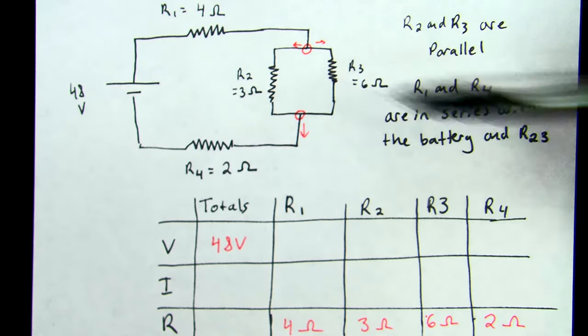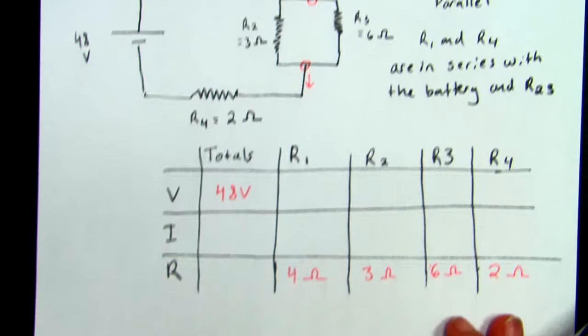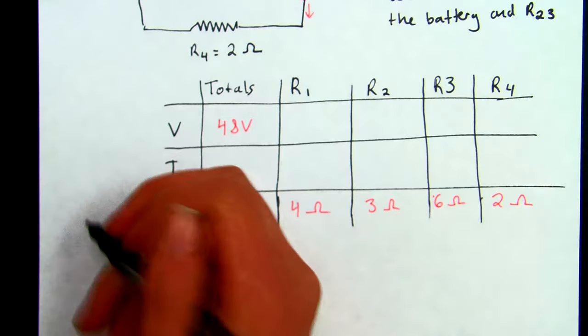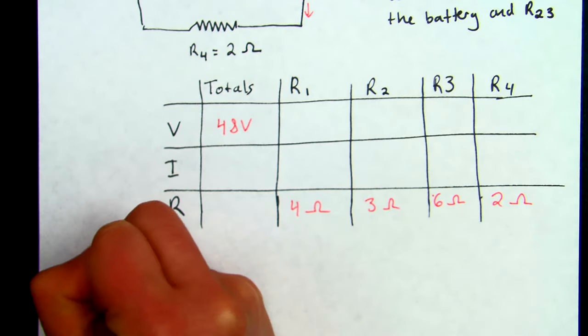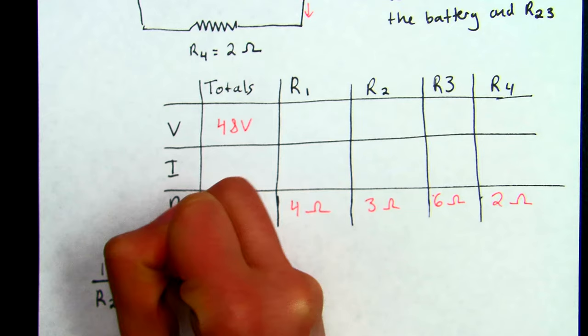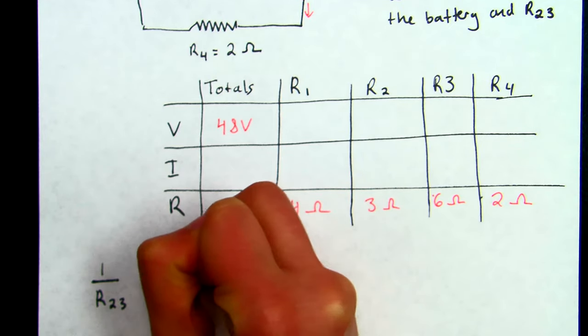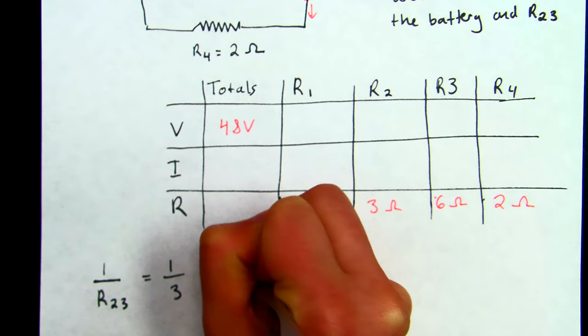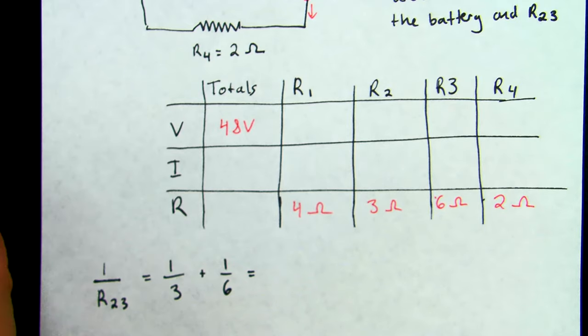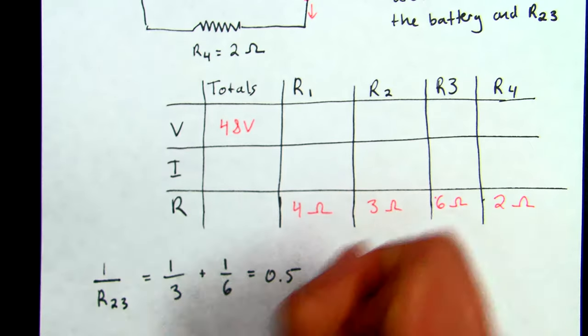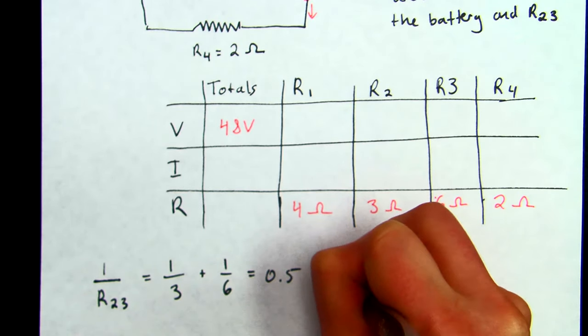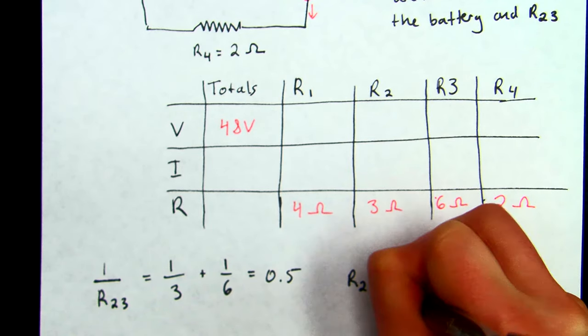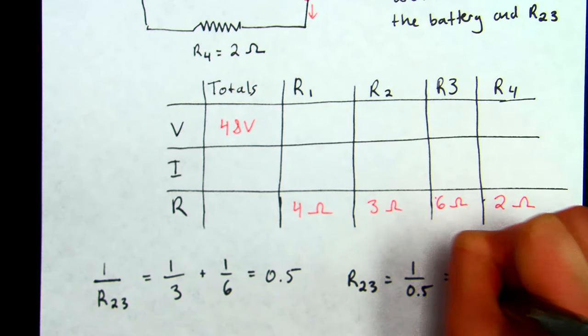So I'm going to actually combine those together first. And since we said they're in parallel, we're going to follow our parallel rules. And so this is going to be the equivalent resistance of 2 and 3 together. So we're going to take 1/3 plus 1/6, and we're going to get 0.5. And hopefully you can do that math in your head that resistor 23 is 1 over 0.5, which is going to be 2 ohms.